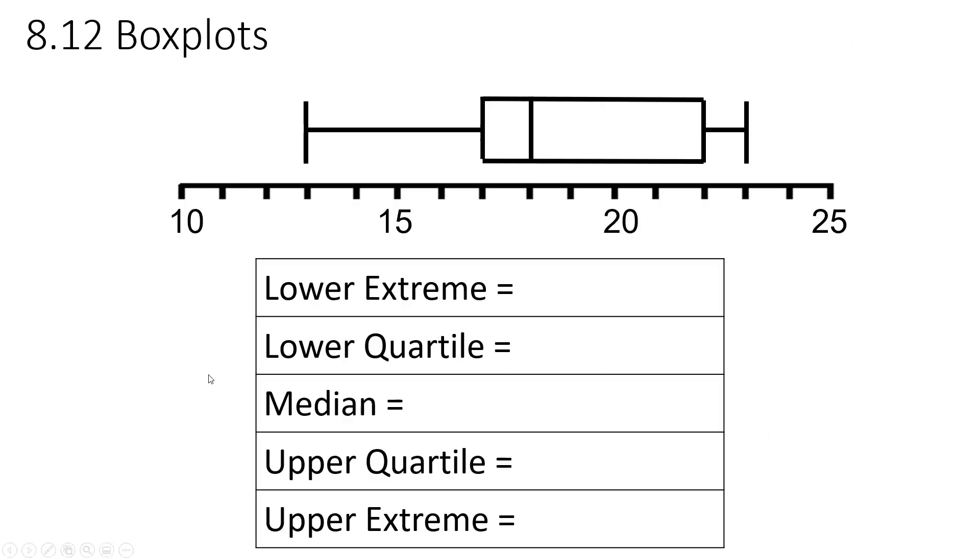Box plots. We're going to go through this real fast. To the very left, that's your lower extreme, 13. Then the lower quartile is going to be 17. The next line, that's the median. That's going to be 18. Your upper quartile is going to be at 22. And then finally, your upper extreme, the very tip of the whisker, is going to be 23. Moving on.